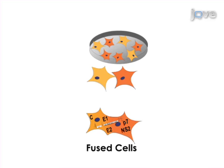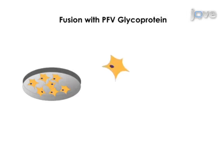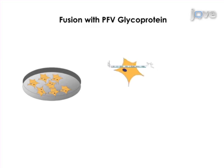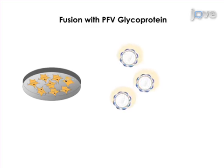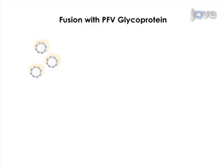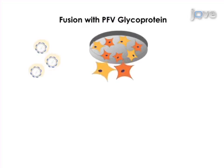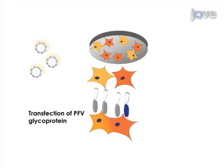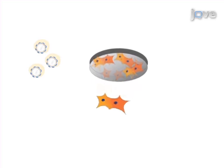In the second fusion method, the first step is production of a high-titer HCV stock. Different cell lines are then co-cultured, and cell fusion is induced by transfection of prototype foamy virus glycoprotein.